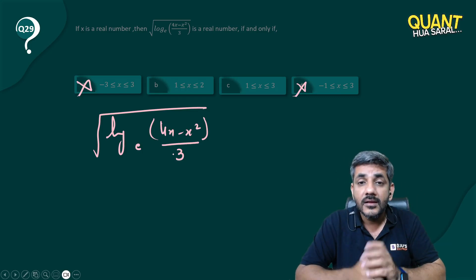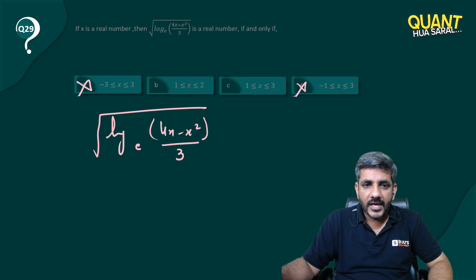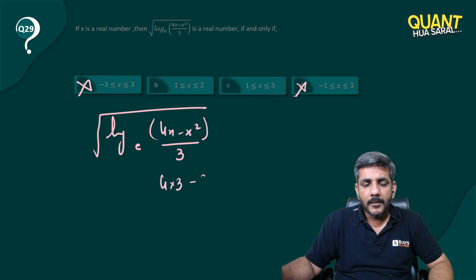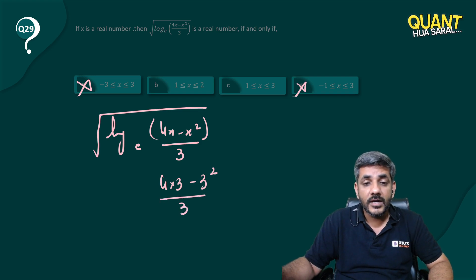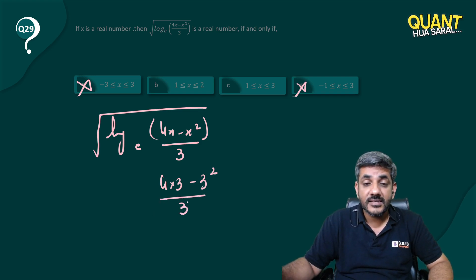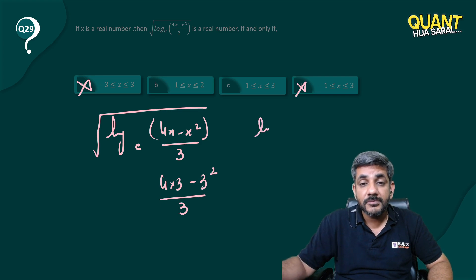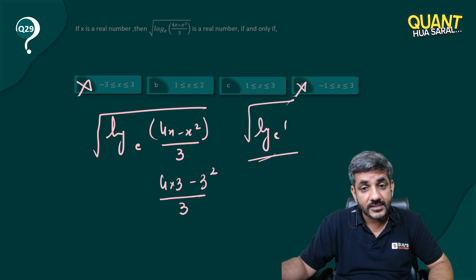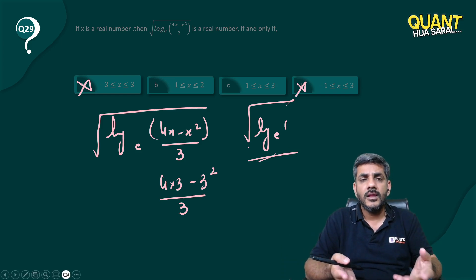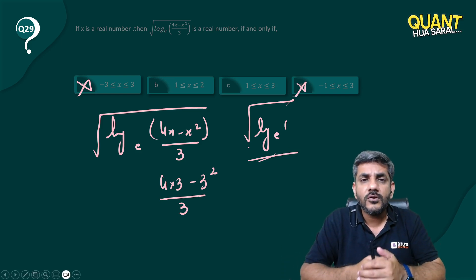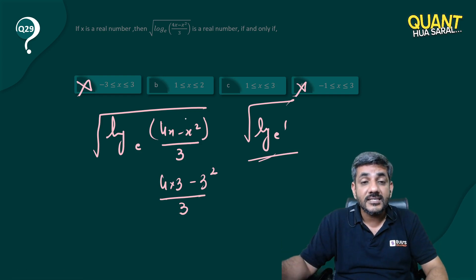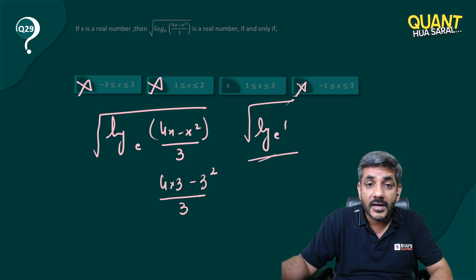Let's try x equals 3. If I put 3: 4 times 3 is 12, minus 3 squared which is 9, all divided by 3. That gives me 12 minus 9 equals 3, and 3 divided by 3 is 1. So I get log of 1. Log of 1 is zero, and the square root of zero is zero — that means x equals 3 satisfies the expression.